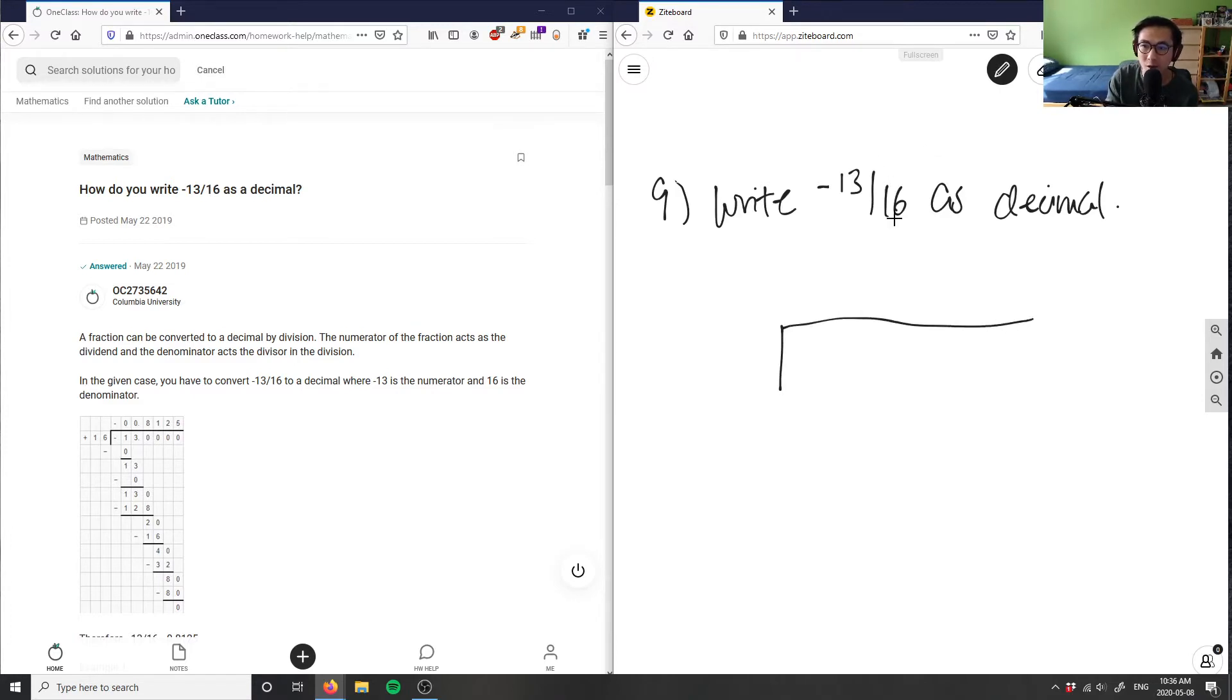We're basically putting the denominator, which is 16, here. And our numerator is going to go into our dividend, which is this guy here. So I'm going to simply put negative 13. And then I'm going to have to add some zeros here. The reason why we add zeros here is to create some decimal digits here. So I'm going to add four here, like they did in the solution.